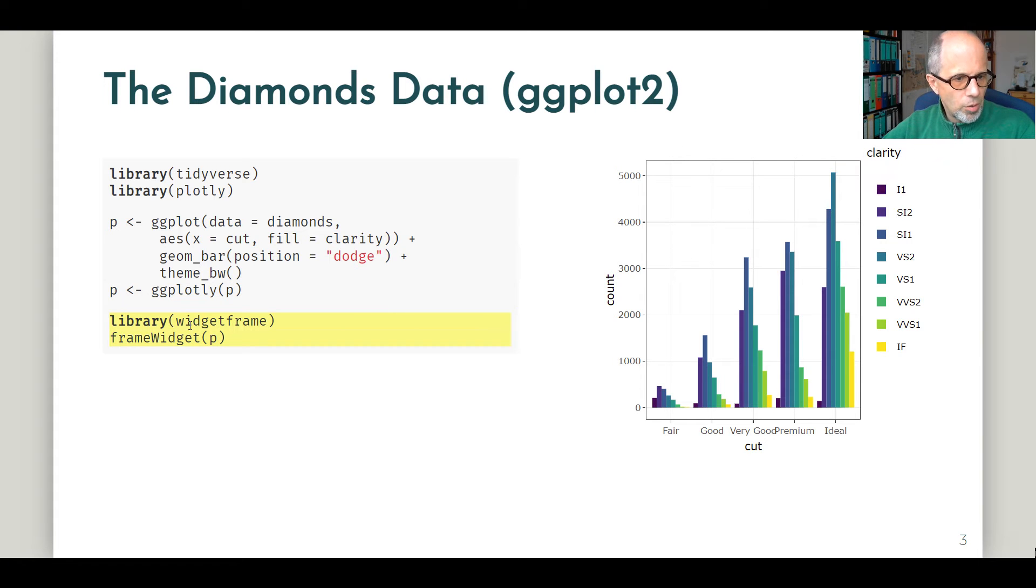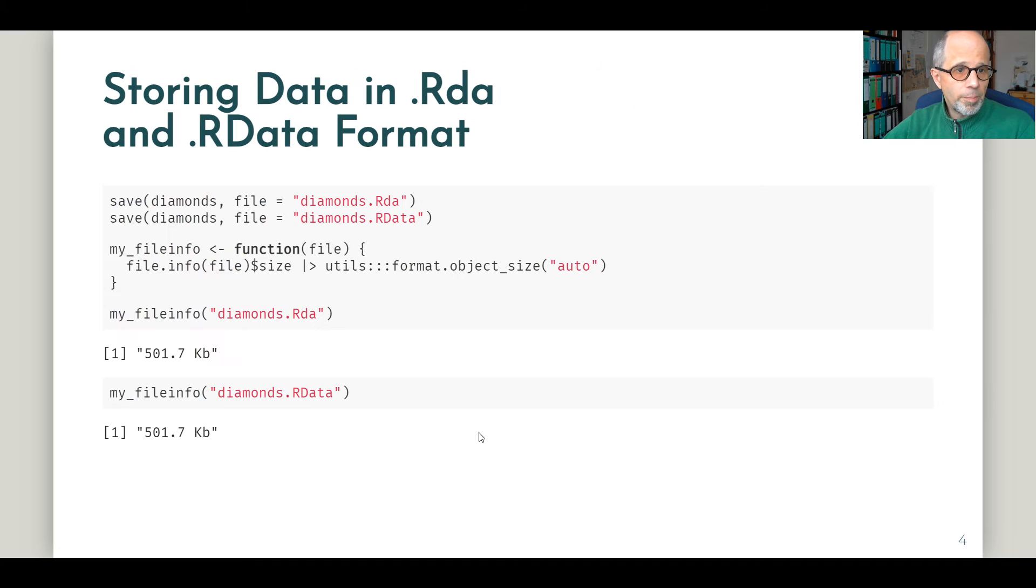And note that I'm using here the widget frame package to create a frame widget. That's only for the sake of this presentation, because in this Shiny format, without this trick, the mouse-over effects would be slightly off. So using this gives me accurate mouse-over effects to the right bars. Okay, so this is the dataset we'll be using, but now we'll just store and load the data.